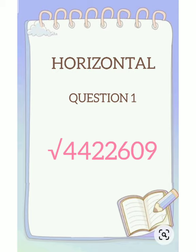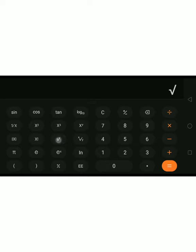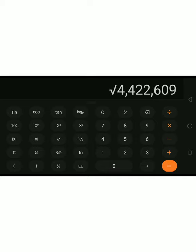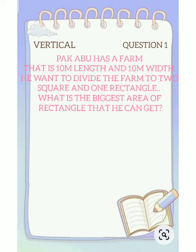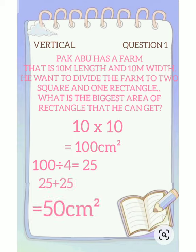For this question, we don't have to waste our time to calculate it manually. We just calculate it using a calculator, so the answer is 2,103. Next, vertical part, question number one. Firstly, 10 multiplied by 10 equals 100 cm². Then 100 divided by 4 equals 25, and 25 plus 25 equals 50 cm².